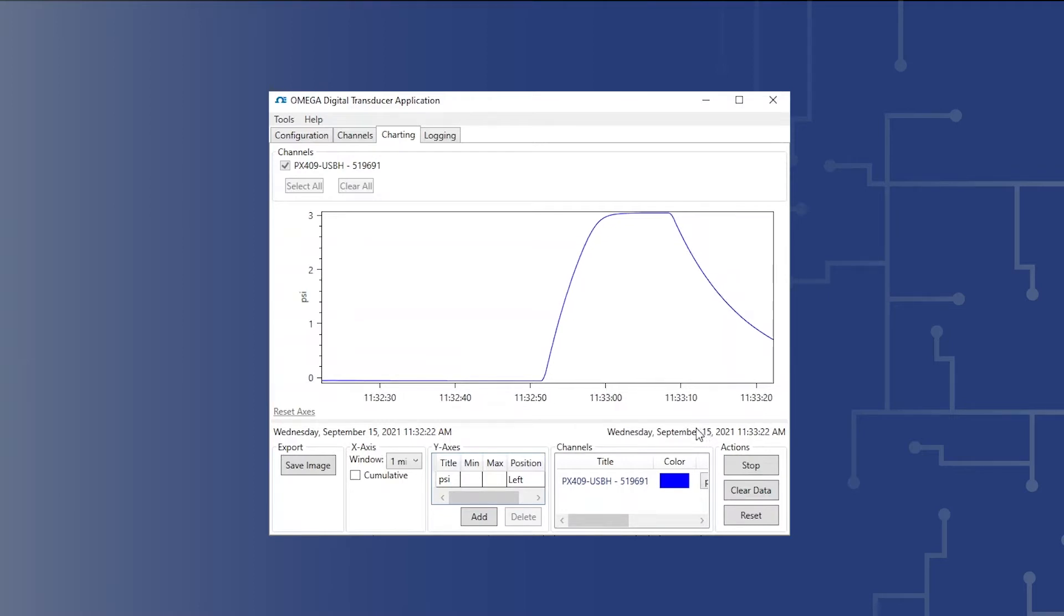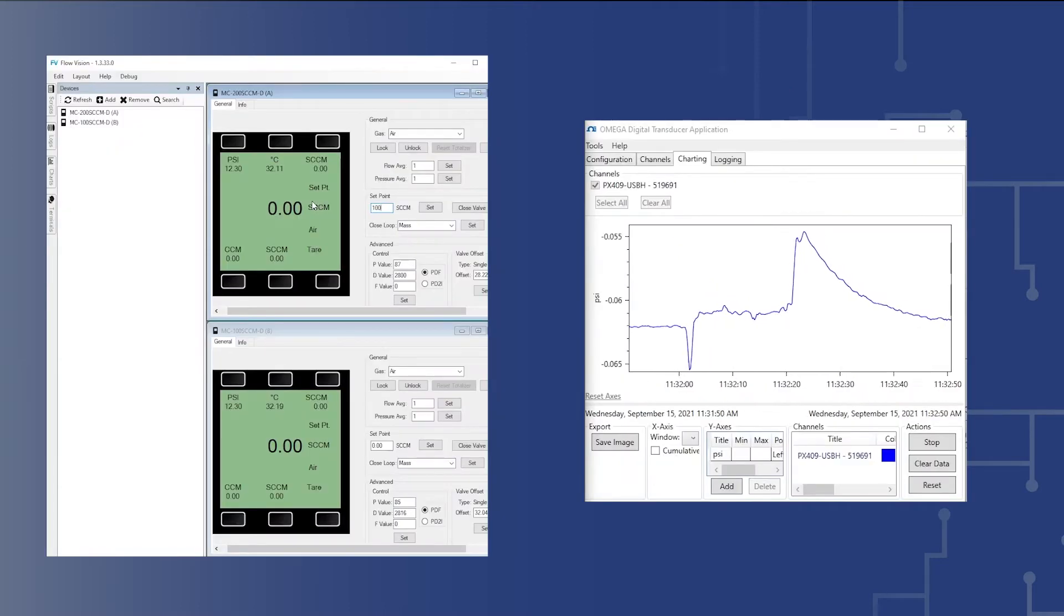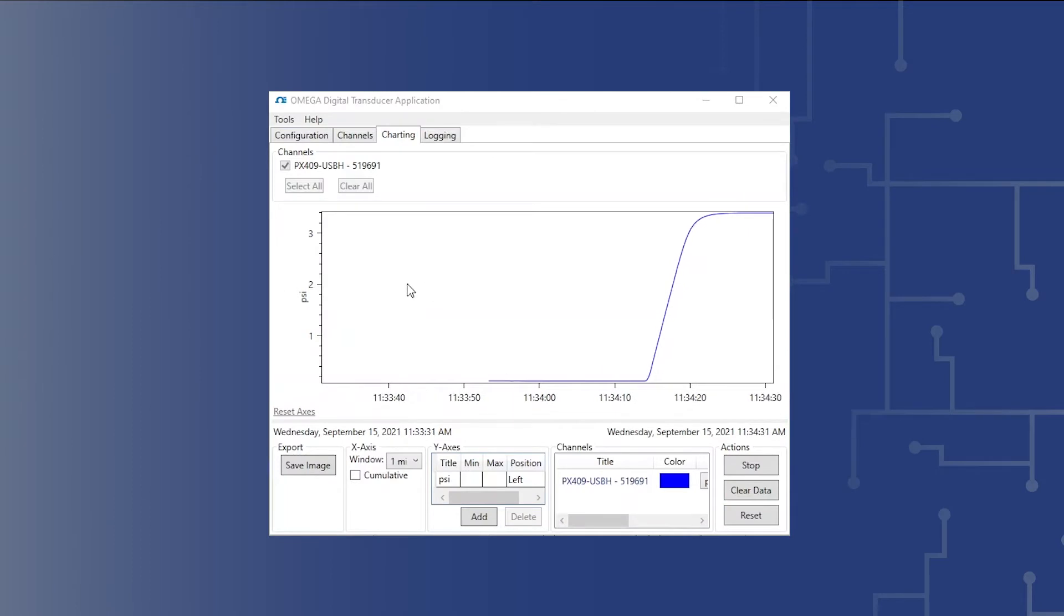10. If there are leaks, the leak should be found and fixed. Once a leak is identified and fixed, retest the system for additional leaks. This result shows a leak-free system.